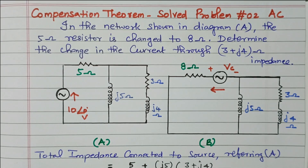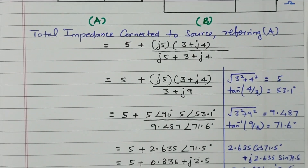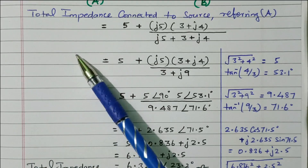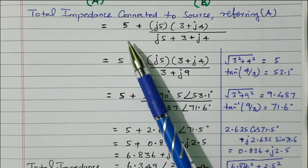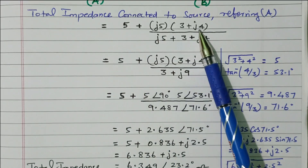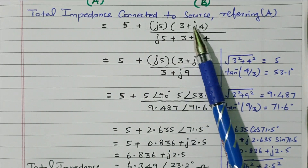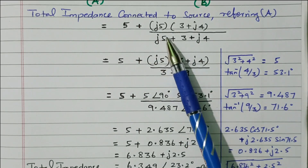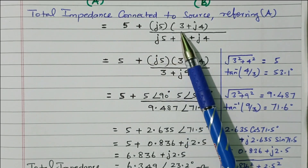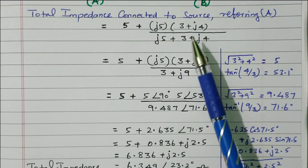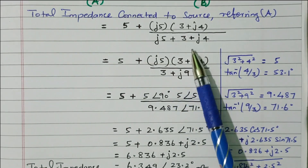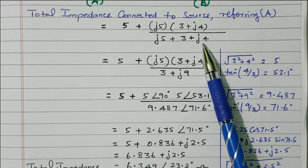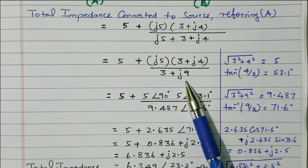Now we will first find network A. We will find what is the total impedance in that circuit. The total impedance connected to the source: 5 plus, the inductor J5 in parallel with the resistor-inductor series combination. R1 into R2 divided by R1 plus R2. R1 is J5 inductor, R2 is 3 plus J4. So: 5 plus J5 into (3 plus J4) divided by J5 plus 3 plus J4. Adding J4 and J5 gives J9.